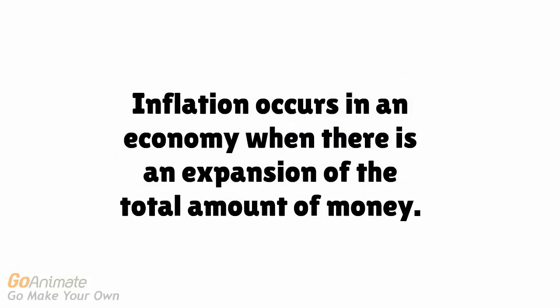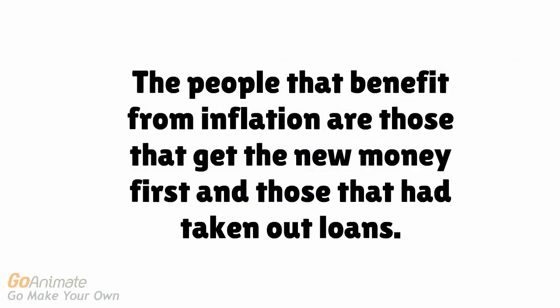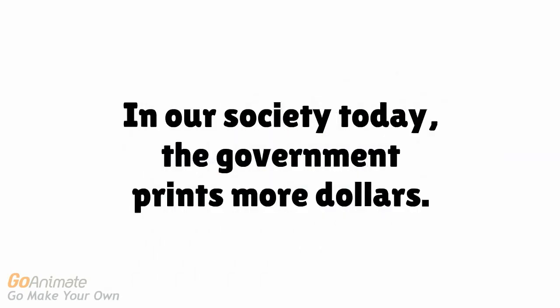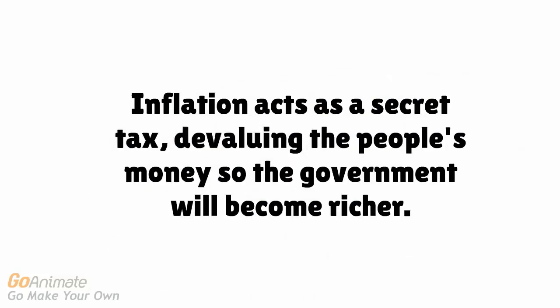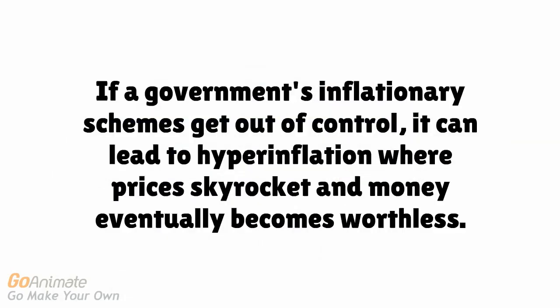Inflation occurs in an economy when there is an expansion of the total amount of money. As a result of inflation, prices rise and the purchasing power of money eventually decreases. The people who benefit are those that get the new money first and those that had taken out loans. Governments throughout history have tried to get richer through inflation by debasing the money supply. In our society, the government prints more dollars. Inflation acts as a secret tax, devaluing the people's money so the government becomes richer. If a government's inflationary schemes get out of control, it can lead to hyperinflation where prices skyrocket and money eventually becomes worthless.